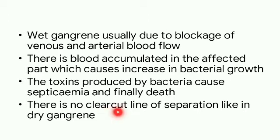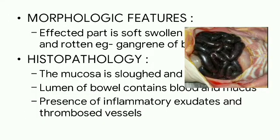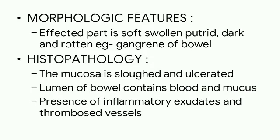Unlike dry gangrene, there is no clear line of separation between the normal and gangrenous tissue in wet gangrene. The morphological features are that the affected part is soft, swollen, and putrid — dark and rotten. For example, gangrene of the bowel: this is the intestine showing a very blackish, swollen appearance. Histopathologically, the mucosa is sloughed and ulcerated, the lumen of the bowel contains blood and mucus, and there is presence of inflammatory exudates and thrombosed vessels.